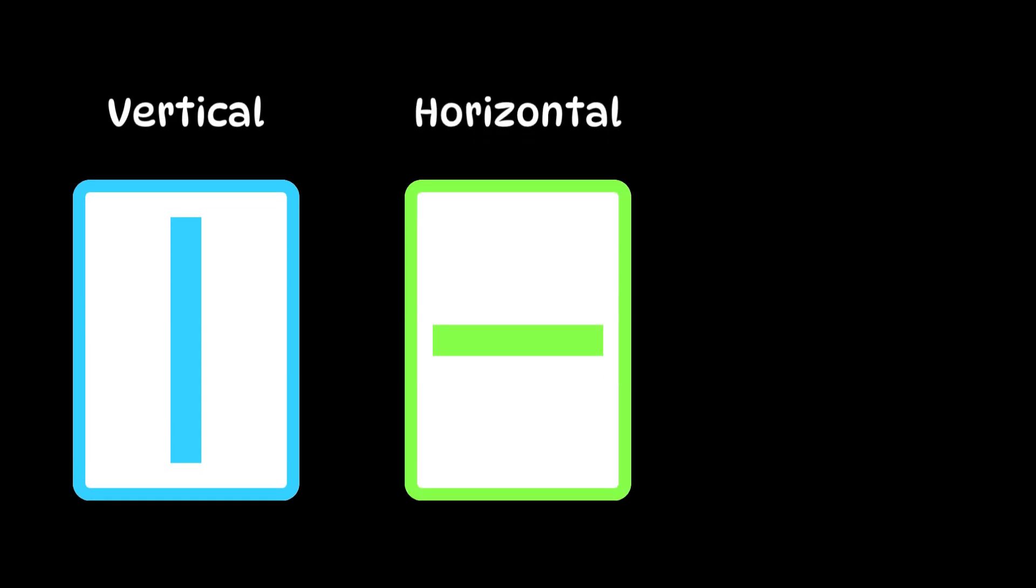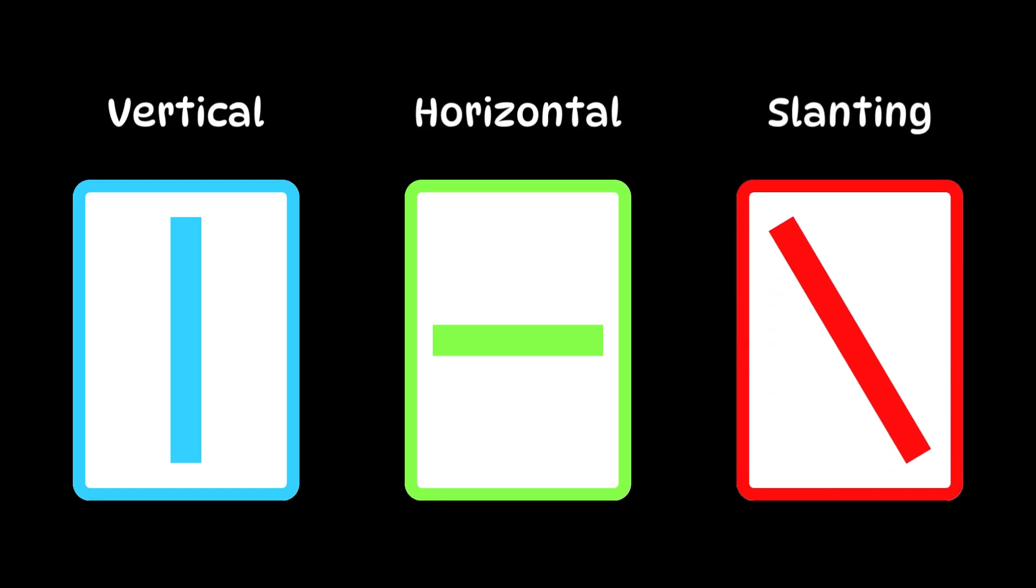Straight lines can be vertical lines or standing lines, horizontal lines or sleeping lines, and slanting lines like a slide.